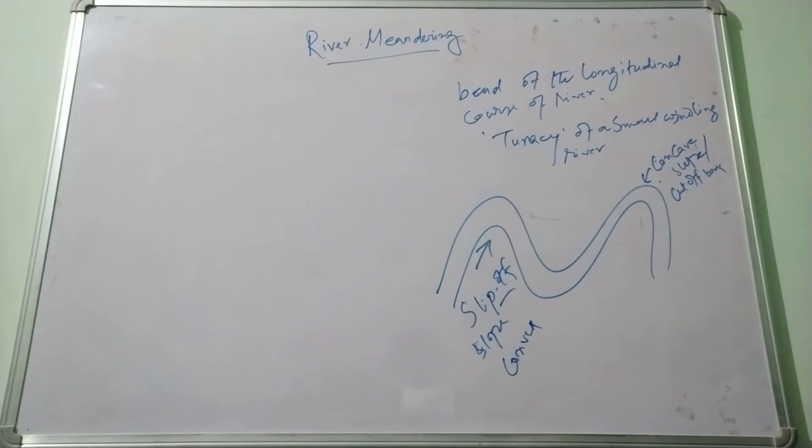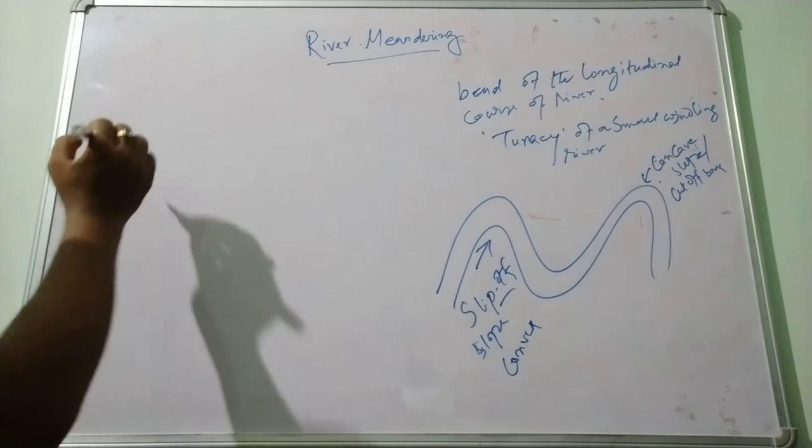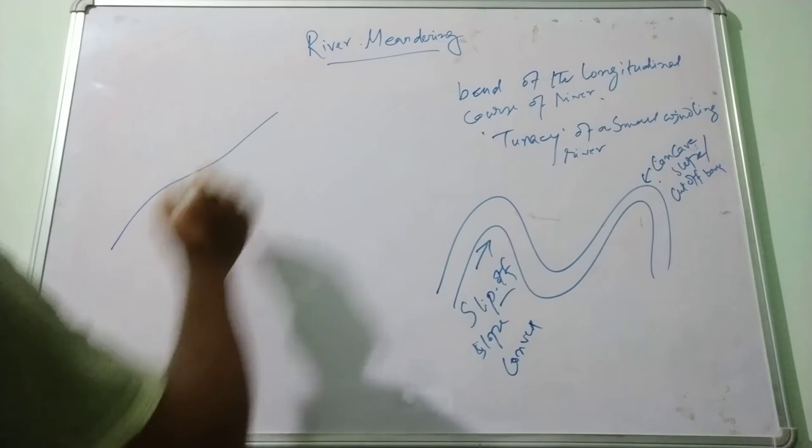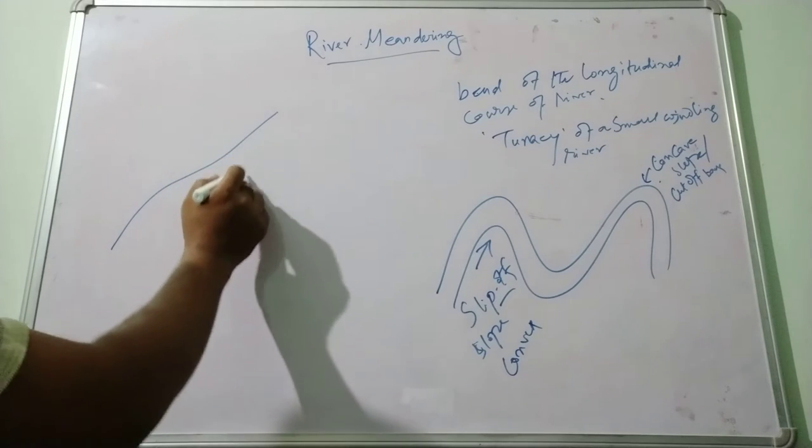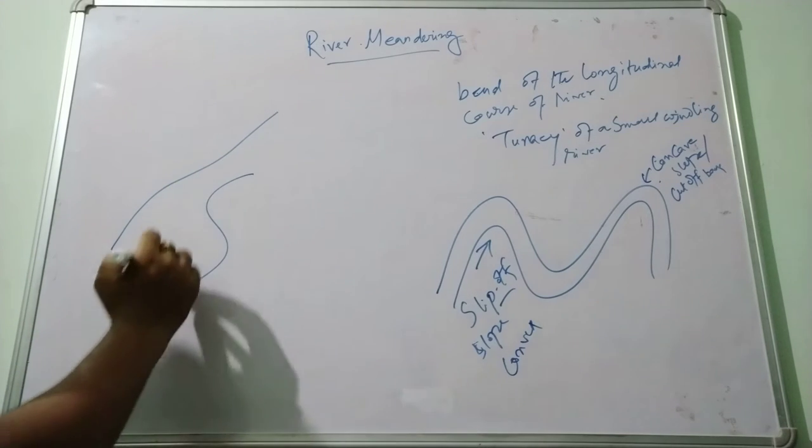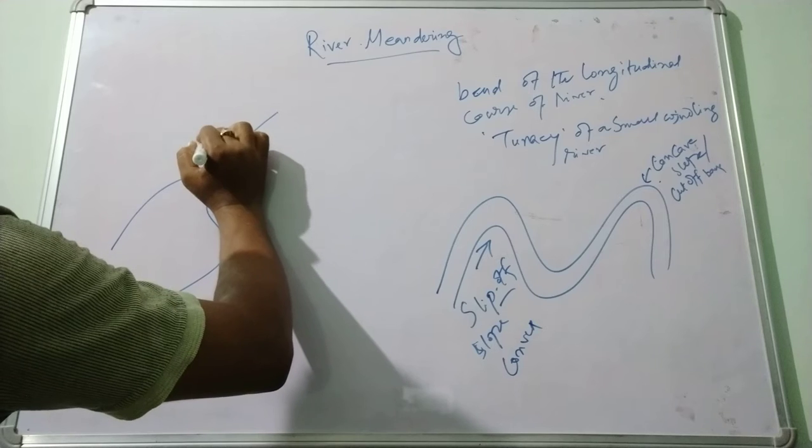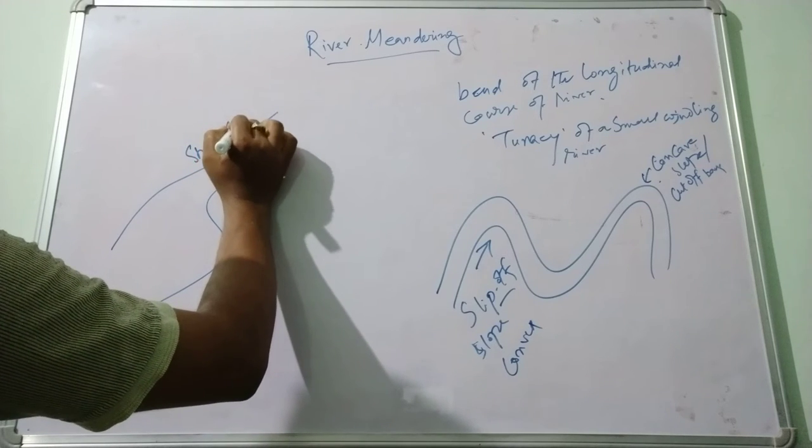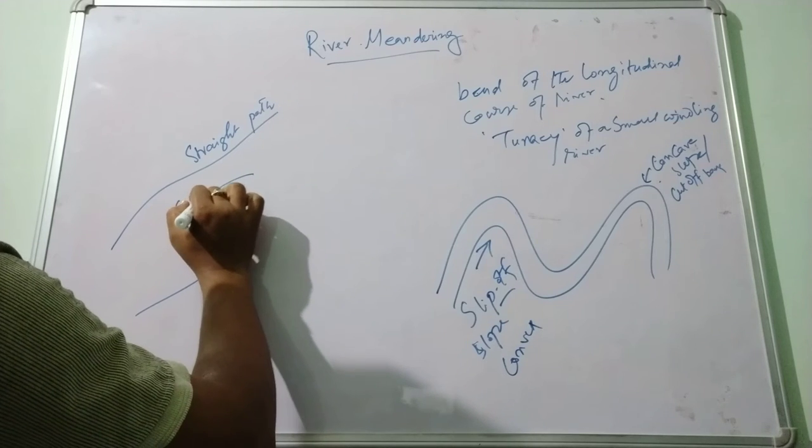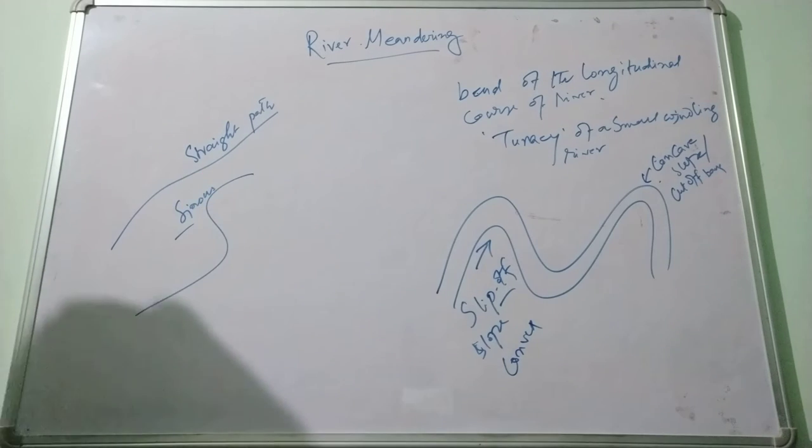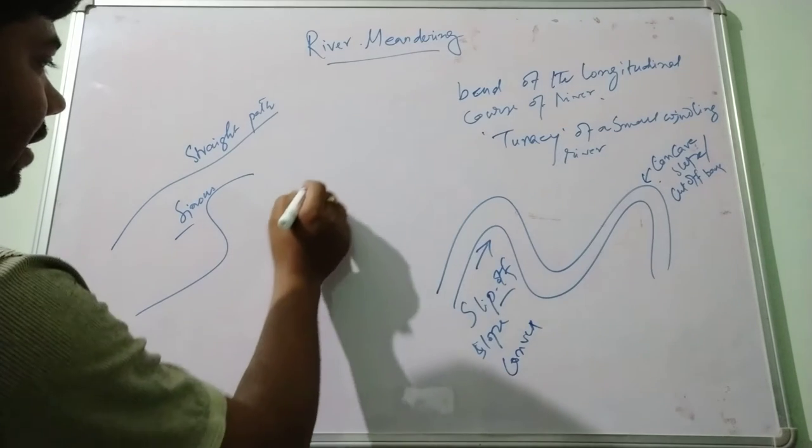Geometrically, the river cannot flow in a straight way. It will always flow in a sinuous curve, straight curve in the sinus. And this sinuosity index is measured by the ratio between the channel length and the valley length.